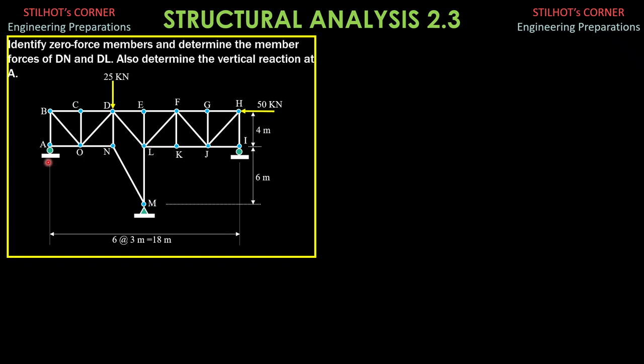So, let's show first that the truss is stable and statically determinate. Obviously, this is a stable truss. Then, the number of reactions, external reactions is 1 here, 2 here, and another 1 here. So, R is 4.